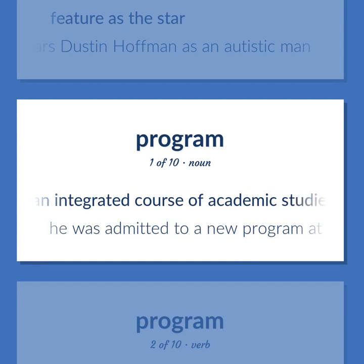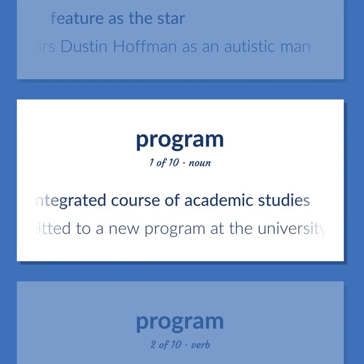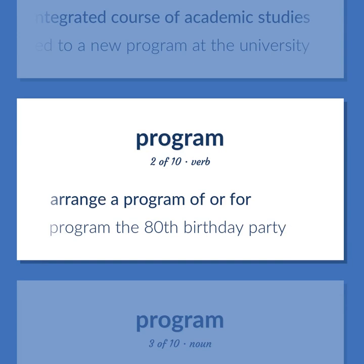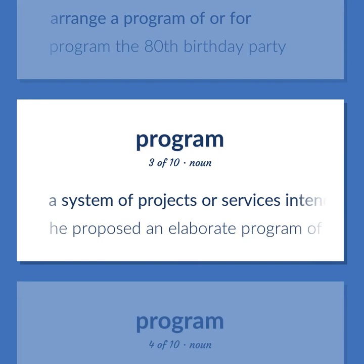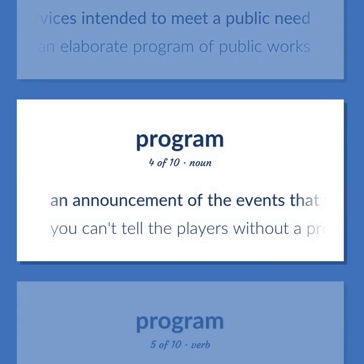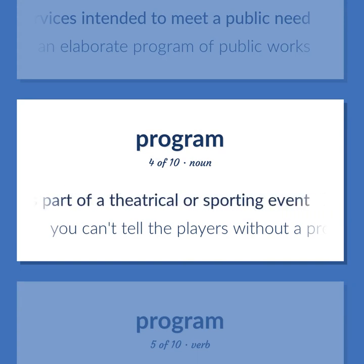Program: An integrated course of academic studies — he was admitted to a new program at the university. Arrange a program of or for, as in: program the 80th birthday party. A system of projects or services intended to meet a public need — he proposed an elaborate program of public works. An announcement of the events that will occur as part of a theatrical or sporting event — you can't tell the players without a program.